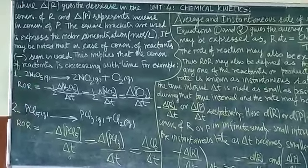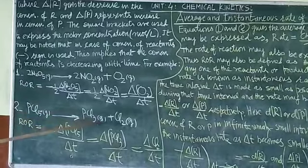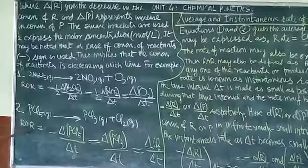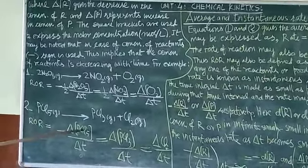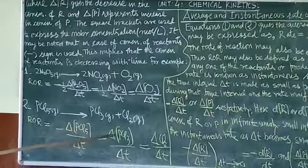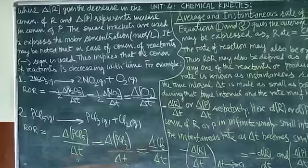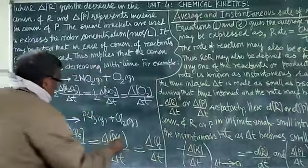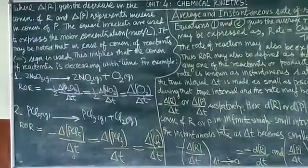Again, I have the equation: PCl5 gas gives PCl3 gas plus Cl2 gas. The rate of reaction is equal to minus delta PCl5 over delta T, which is equal to delta PCl3 over delta T, which is equal to delta Cl2 over delta T.